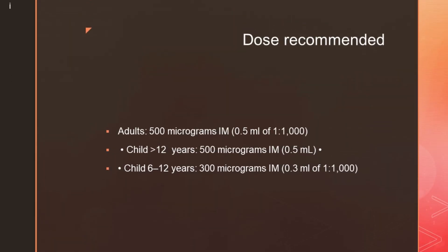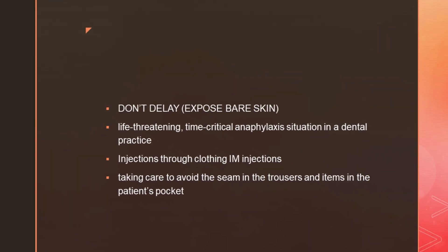The recommended dose in adults is 0.5 ml of 1:1000 adrenaline intramuscularly. For children greater than 12 years: 500 micrograms IM (0.5 ml); for children 6–12 years: 300 micrograms IM (0.3 ml of 1:1000). Do not delay to expose bare skin in an anaphylactic emergency — injection through clothing in the IM route is acceptable. Avoid the seam of trousers and consider items in the patient's pocket when injecting through clothing.